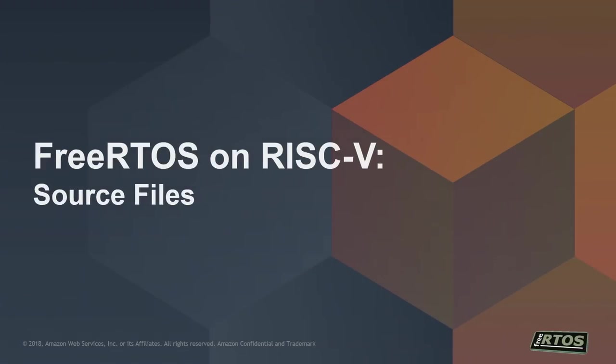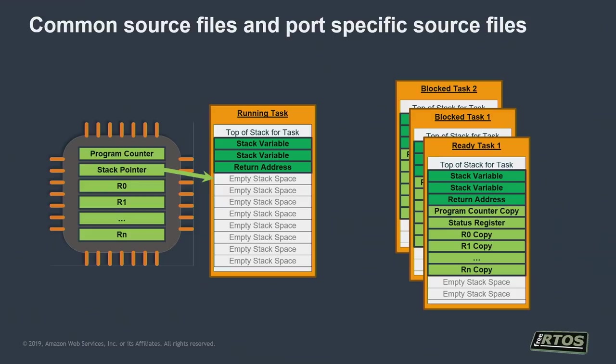Now that's the background — the main point being it's not Linux, very different from Linux. What I want to do now is show you how to get FreeRTOS running on a RISC-V core. The first thing you have to do is understand which source files you need. With the FreeRTOS kernel, most source files are common to all architectures — it's ported to about 40-odd different architectures. Then you need a small piece of code, typically written in assembly, which is specific to the architecture.